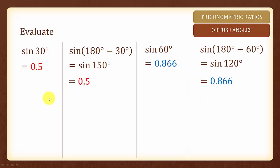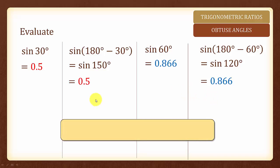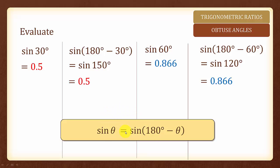Do you notice any similarity between these examples? Given any angle theta, sine theta will be equal to sine 180 degree minus theta. For example, sine 30 degrees will be equal to sine 150 degrees. Sine 60 degree will be equal to sine 120 degrees. The trigonometric ratios of the acute and obtuse angles are equal.